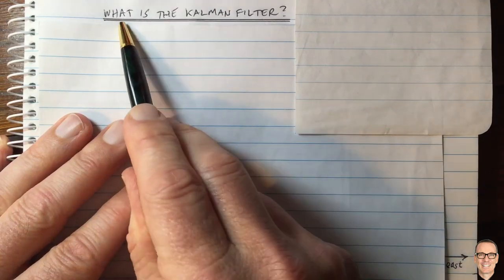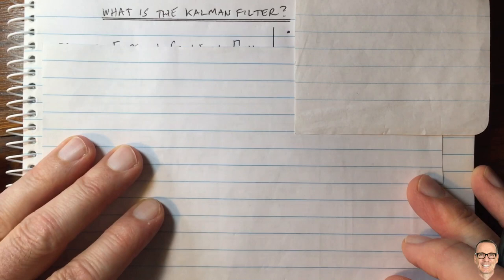What is the Kalman filter? It's the optimal linear filter for discrete time systems.